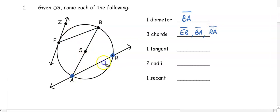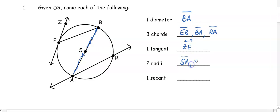A tangent line touches the circle once and keeps going — it has arrows. Our tangent line would be line ZE with arrows on the symbol. For radii: since the diameter is BA, it's made by two radii, so our radii are SB and SA. Finally, RA as a chord is just a segment, but RA with an arrow is going to be the secant line.